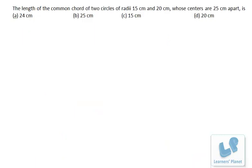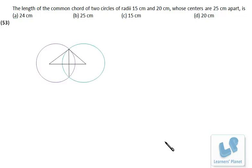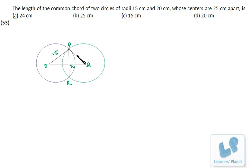Now let's look at this problem. The length of the common chord of two circles of radii 15 and 20 centimeters whose centers are 25 centimeters apart. Let me draw the two circles. Call the centers O and Q, with the chord endpoints P and R, and X the midpoint of the chord. OP = 15 (radius of first circle), OQ = 25 (distance between centers), and PQ = 20 (radius of second circle). We need to find PR, the common chord.